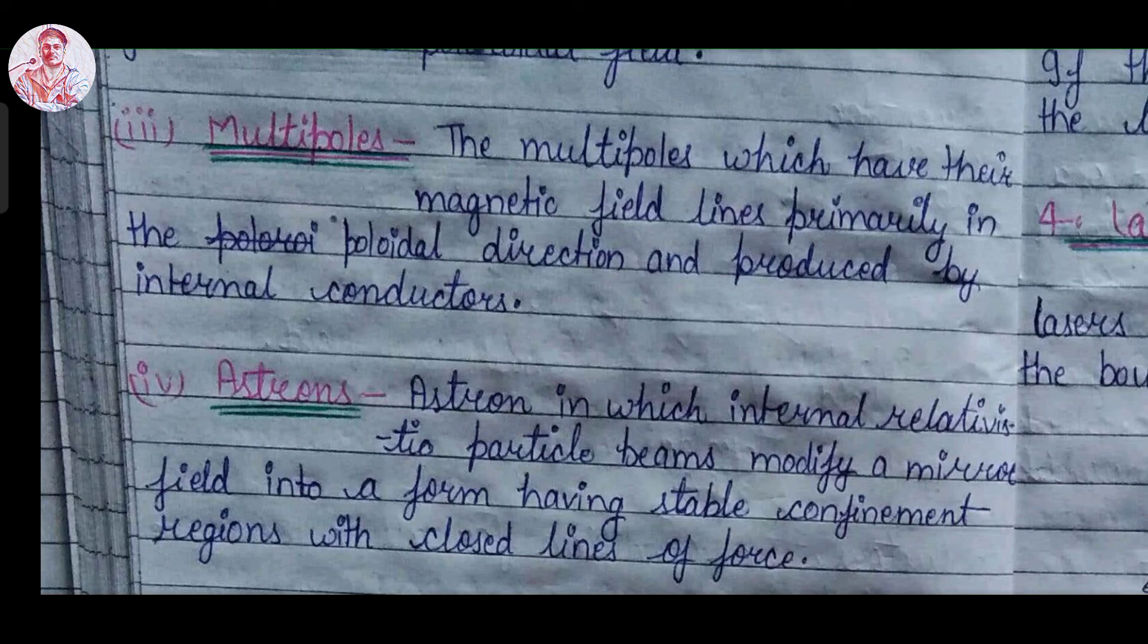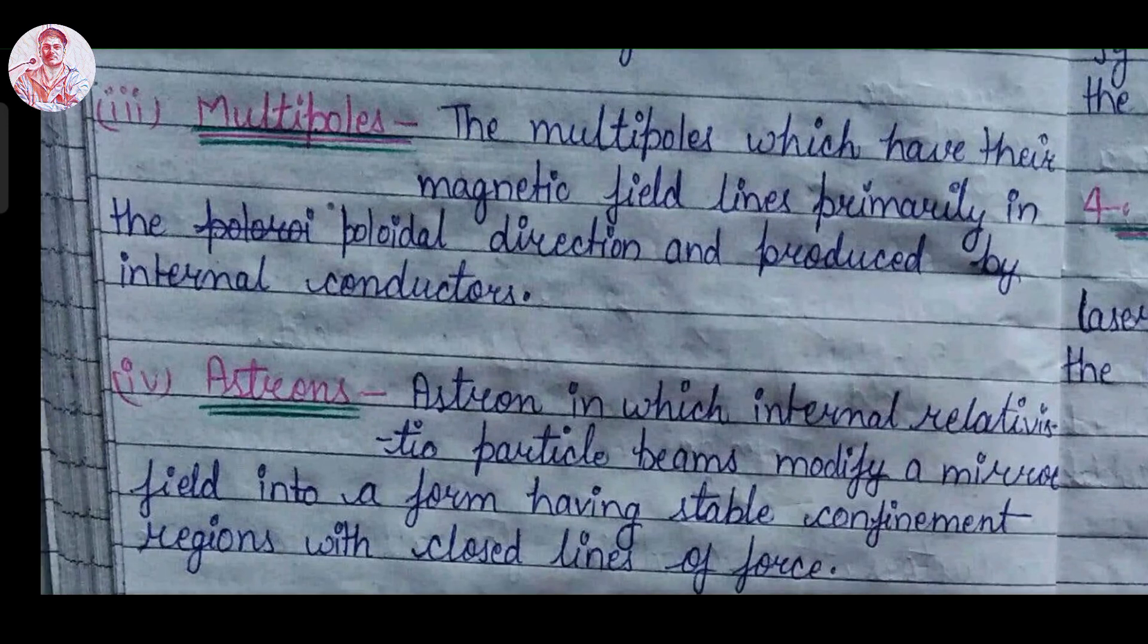Our fourth closed system is Astrons. Astrons in which the internal electric particle beam modifies a mirror field into a form of stable confinement region with closed lines of force. So, these are the plasma confinement techniques through closed systems we have discussed.